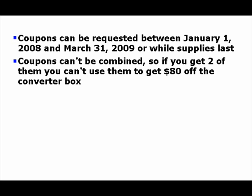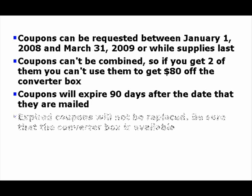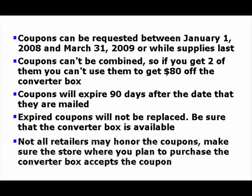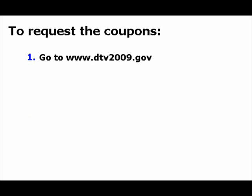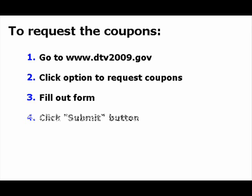The coupons cannot be combined. They expire 90 days after they are mailed to the household that requested them, and expired coupons will not be replaced. Verify that the store where you plan to buy the converter box accepts these coupons — most of them do, but there may be some that don't. To request the coupons, point your browser to www.dtv2009.gov, click on the Request Coupons link, fill out the form with the requested information, and lastly click on the Submit button.